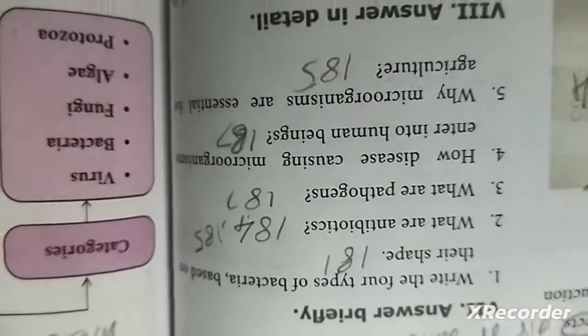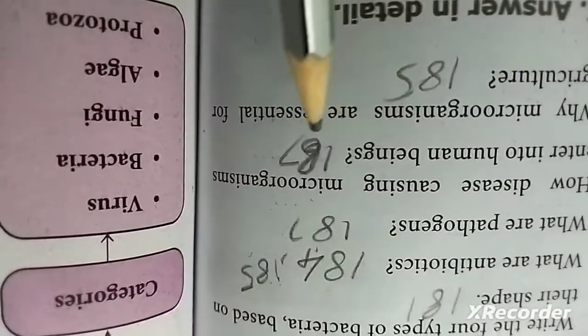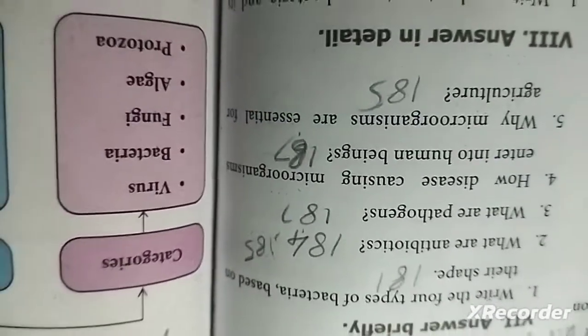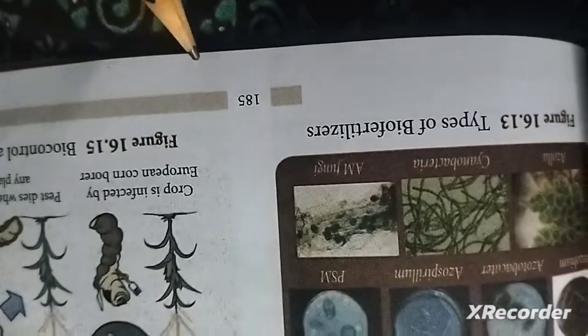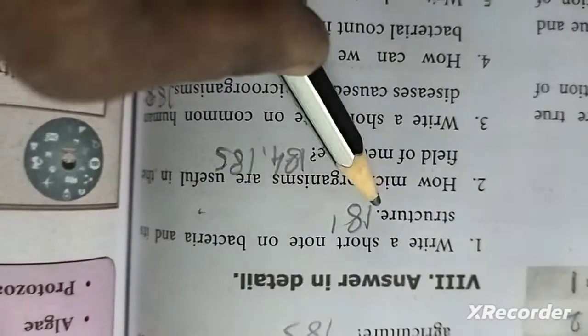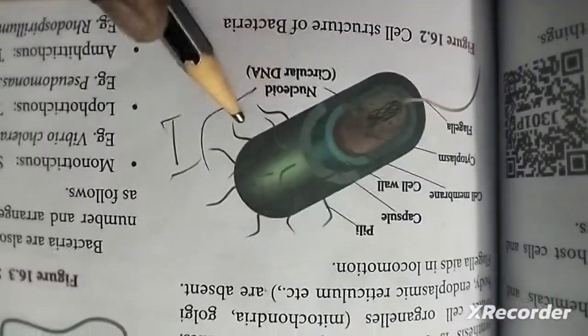Look at page 184 for the definition. Third: what are vaccines? Page 193. Fourth: what are pathogens? Page 187. Next question: how do disease-causing microorganisms enter into human beings? Page 187.